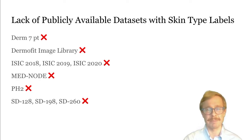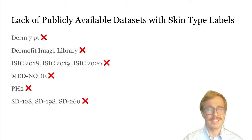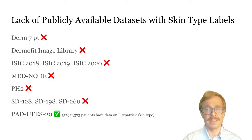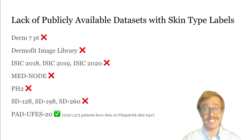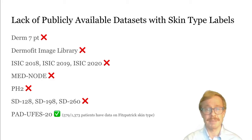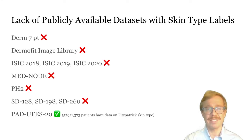With only one exception, none of the publicly available datasets identified by this workshop include skin type labels. The exception is the PAD-UFIS-20, which is a skin lesion dataset composed of patient data and clinical images collected from smartphones. This is a good start, and there's a huge opportunity to improve these datasets by simply annotating the images with skin type.